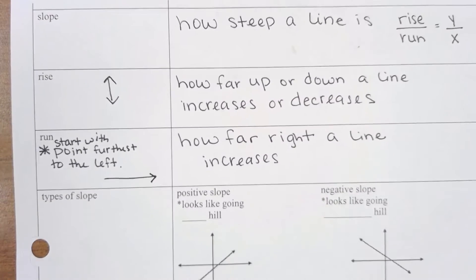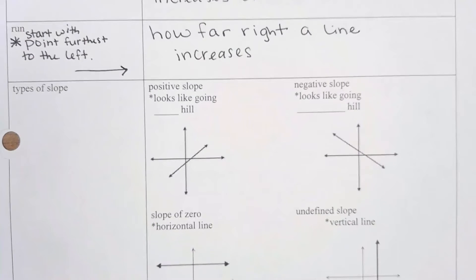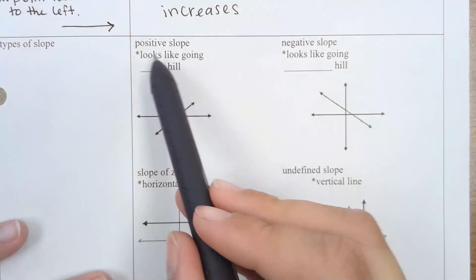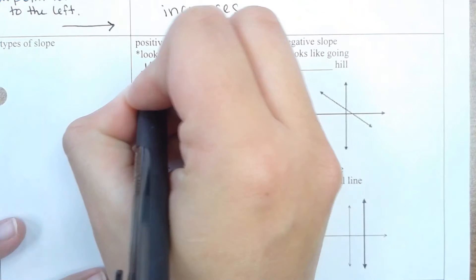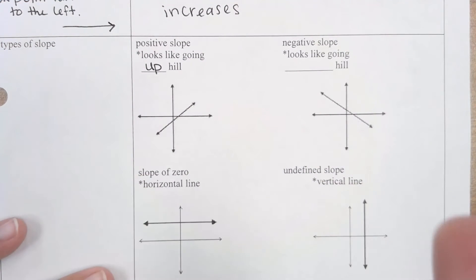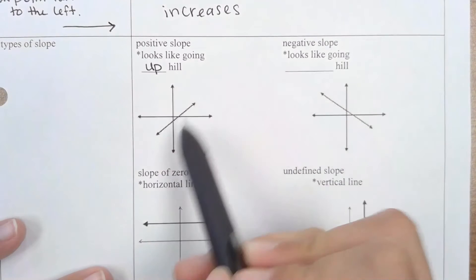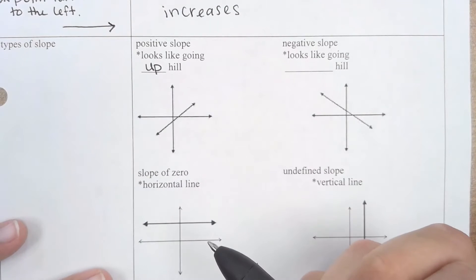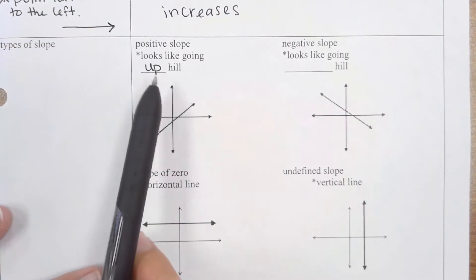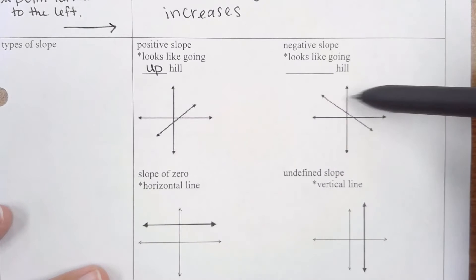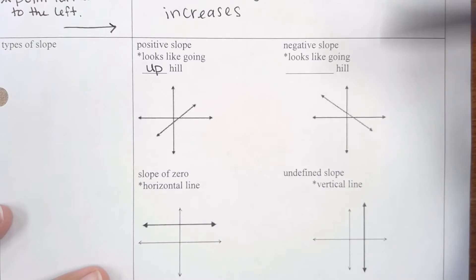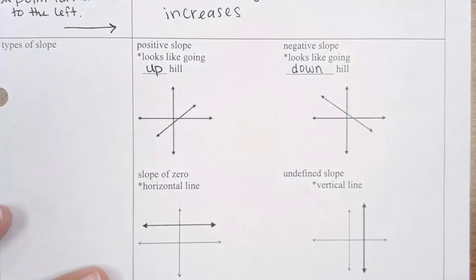Let's remember the different types of slope. We have a positive slope, a negative slope, a slope of zero, and an undefined slope. A positive slope looks like your line is going uphill — you read graphs left to right, and if you start the line furthest to the left and your pen goes up, it's going uphill, which is why it is a positive slope. The opposite is a negative slope — if you start furthest to the left and follow the line going down, it's like going downhill, indicating a negative slope.